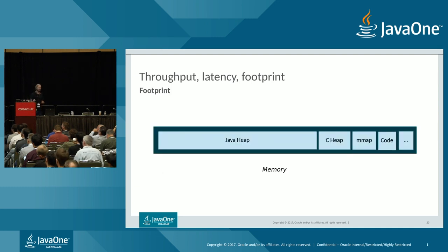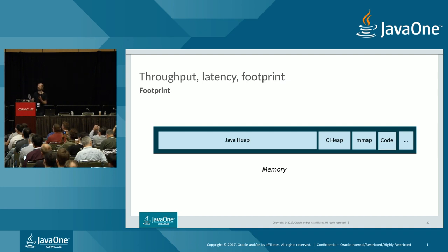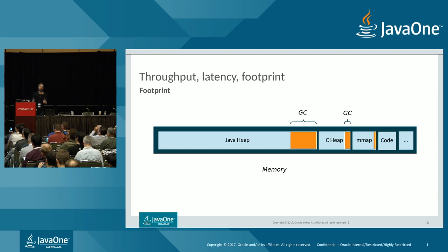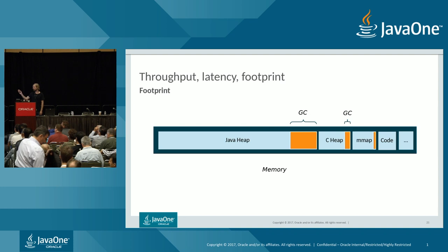The third property is footprint — the memory usage of a Java process. The bulk is the Java heap containing many Java objects, but there's also the C heap or native heap the JVM uses for its own data structures, anonymous pages mapped with mmap, JIT-compiled code, and other things. GC also contributes because different algorithms can result in smaller or larger heaps and consume more or less native memory.